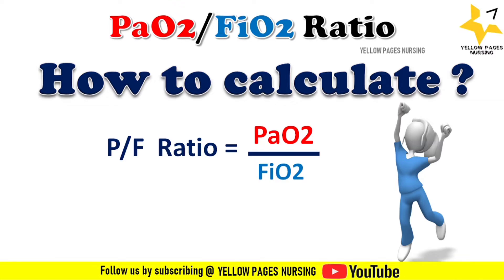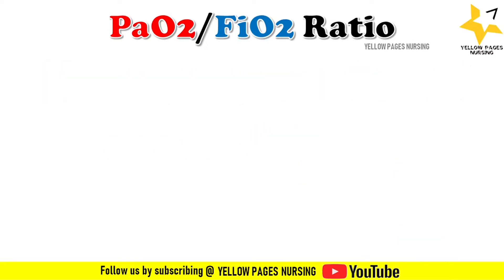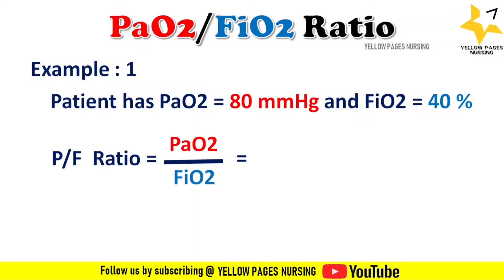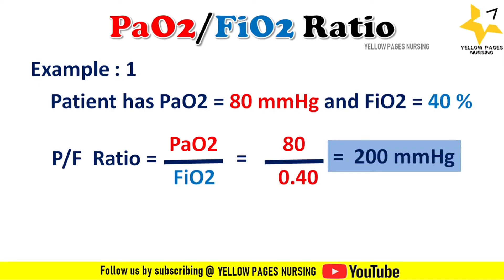Let's do it with an example. A patient has a partial pressure of oxygen of 80 mmHg and a fraction of inspired oxygen of 40%. PF ratio = PaO2 / FiO2 = 80 / 0.40. Do not forget the decimal in FiO2 when doing the calculation. Therefore we get the answer: 200 mmHg.